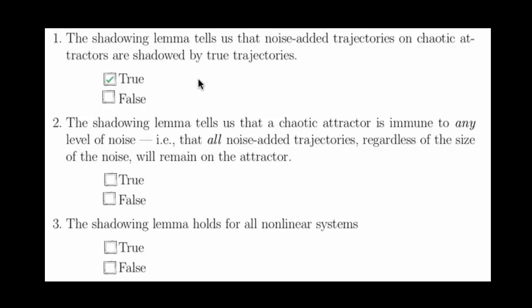That is, if you're on a chaotic attractor and you're bumped by a small amount of noise, then you'll land on an area of the attractor that you would have gotten to anyway if you had continued along that same trajectory for infinitely long. A noise-added trajectory on a chaotic attractor is shadowed by a true trajectory, so a little bit of noise won't be a problem.